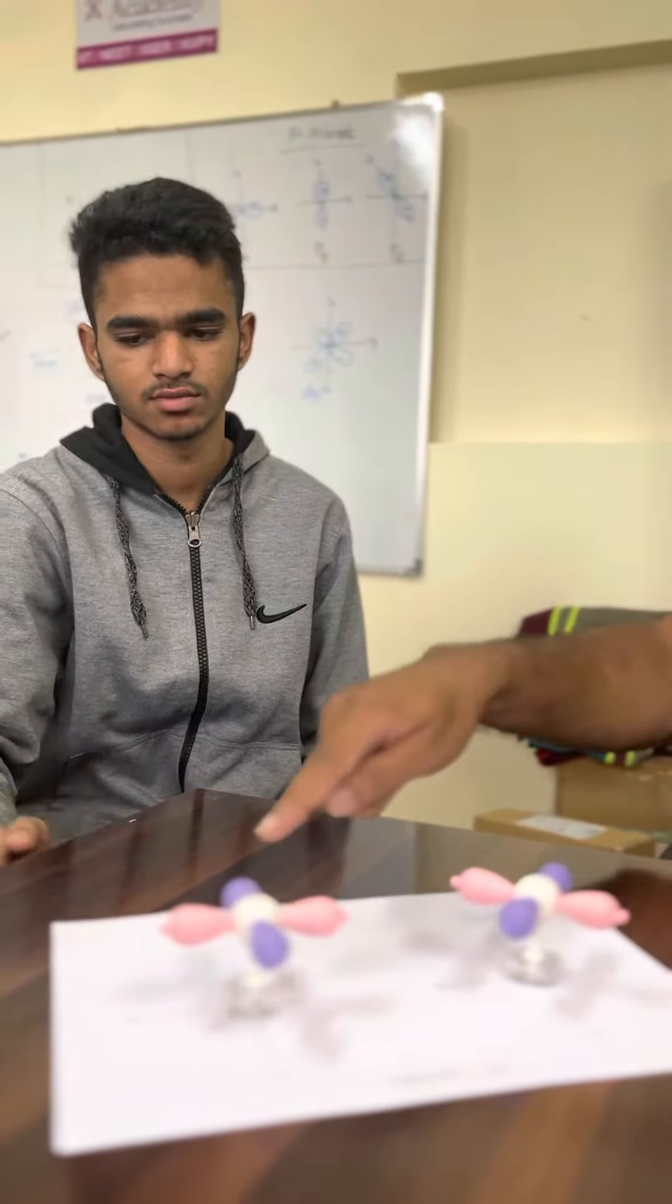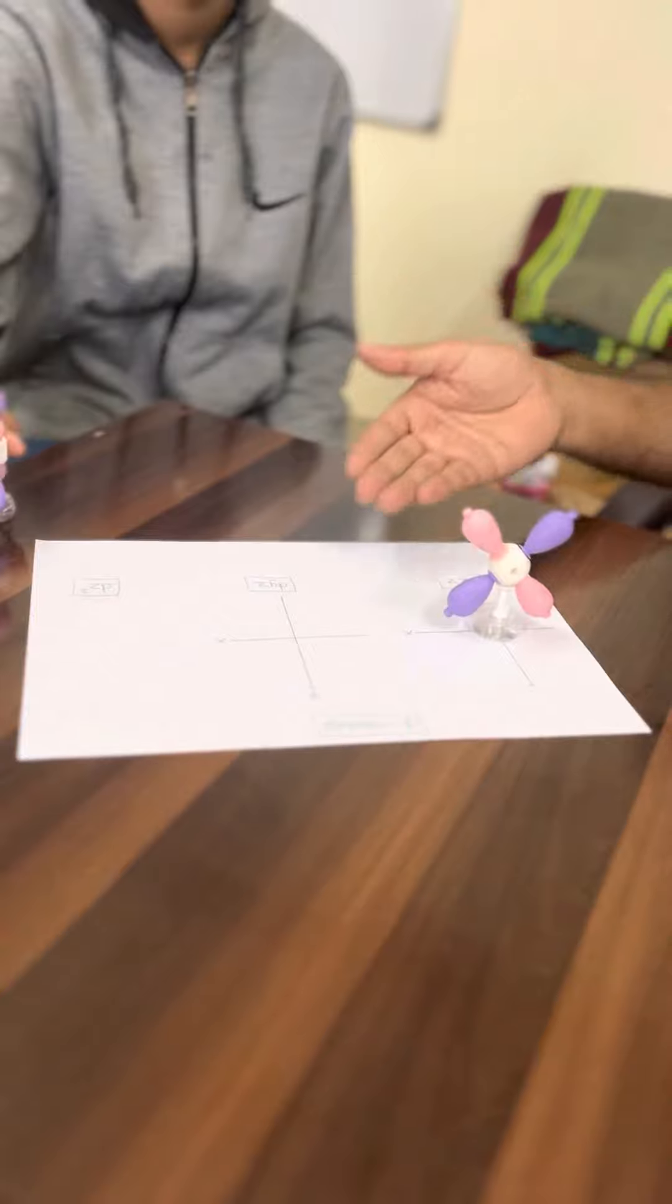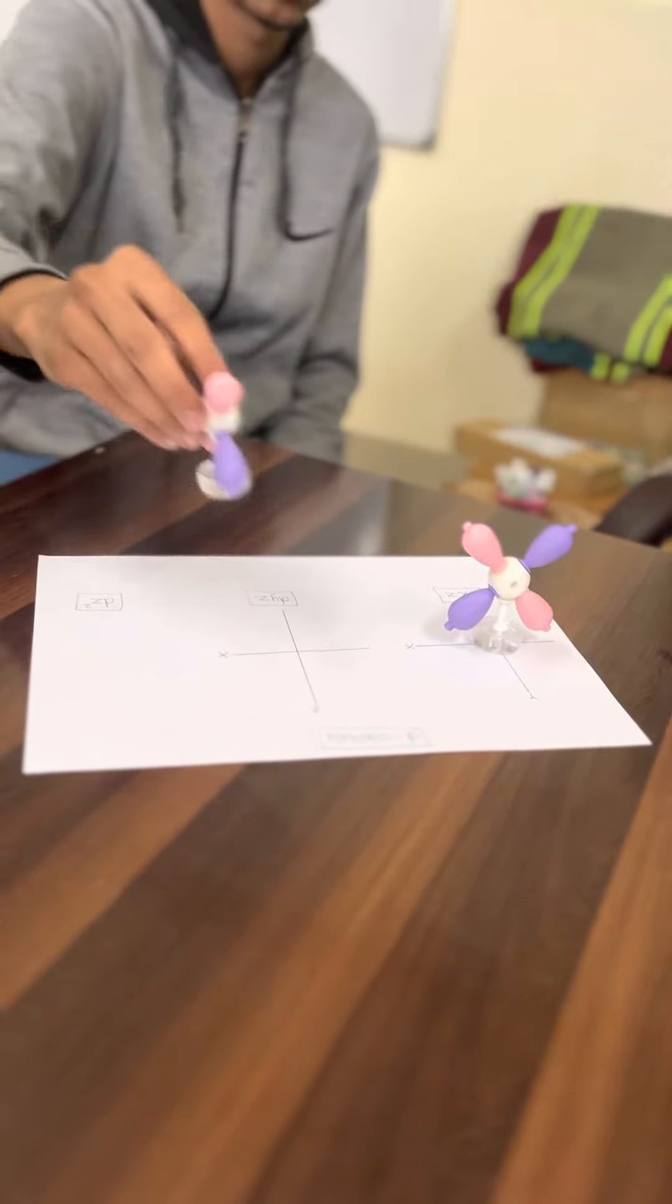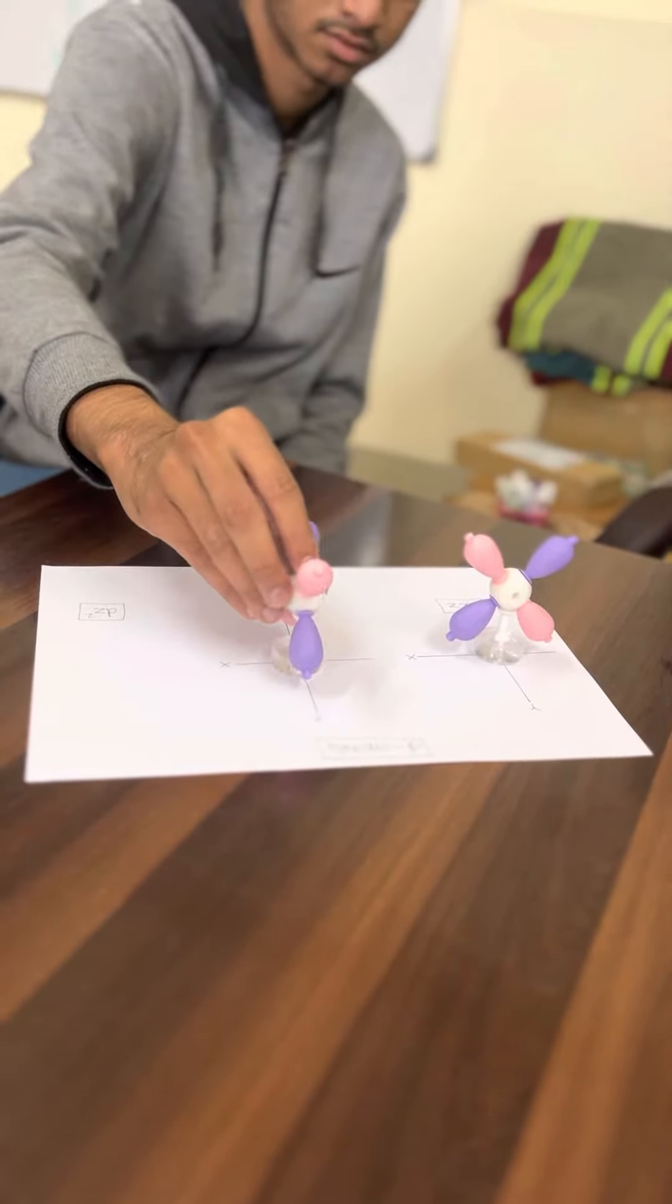Then there are 3 more d orbitals. Show us the dxz, very well, along the x axis and the vertical z axis. The dyz, very well.